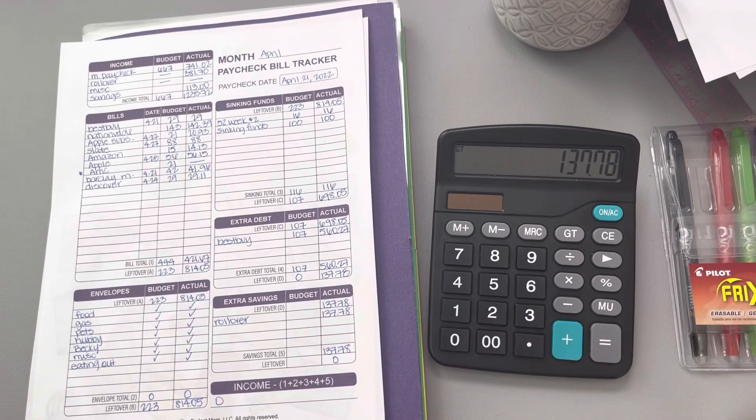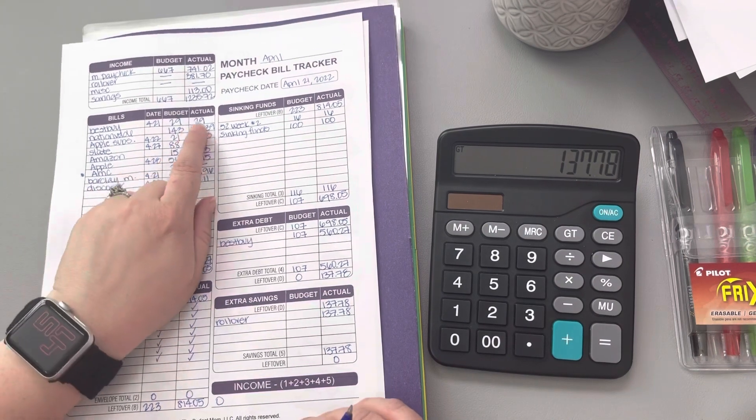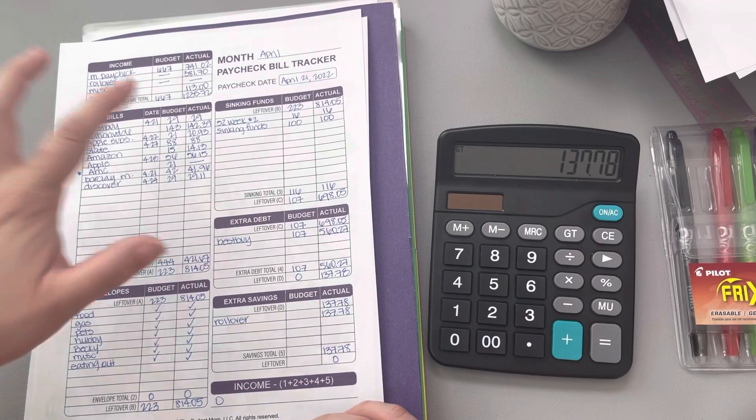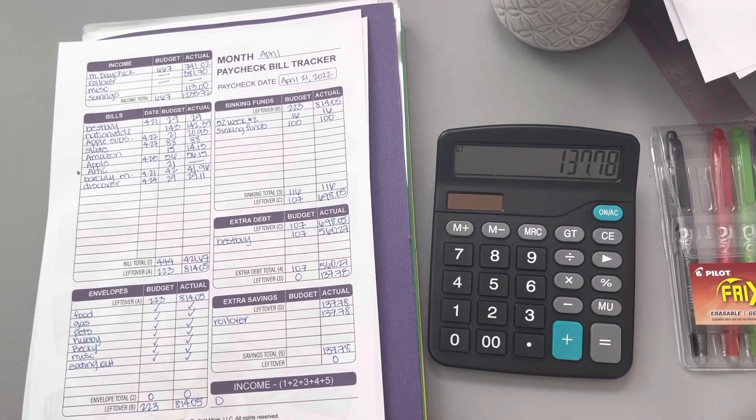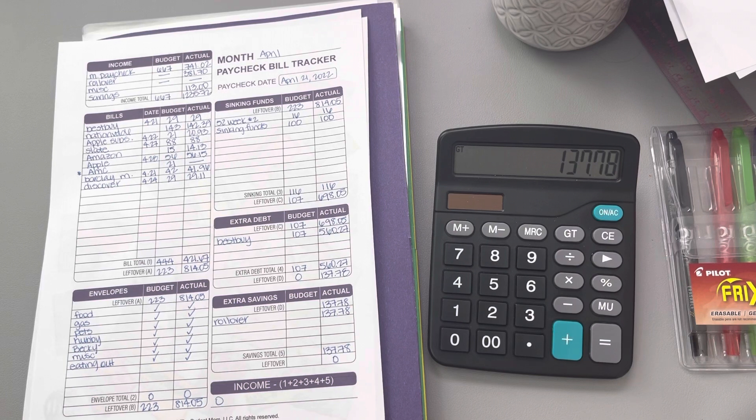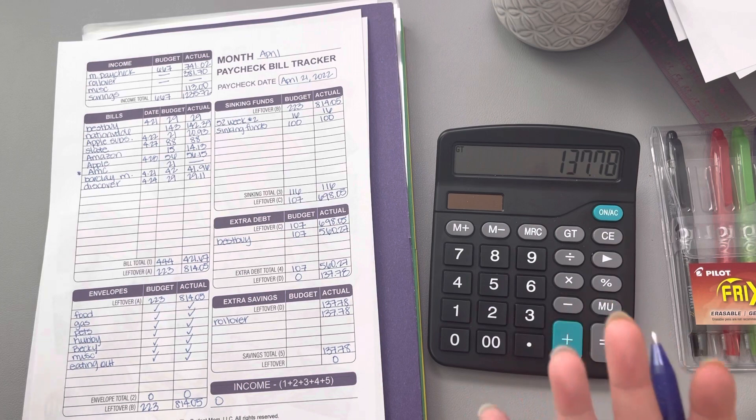I am beyond excited that we went ahead and got that Best Buy paid off. Now this $29 that we've been paying on that Best Buy can be applied to our next debt, which is going to be our Dell account. So I'm hoping that we can go ahead and work on getting that paid off as soon as possible. I'll definitely share that on this journey.